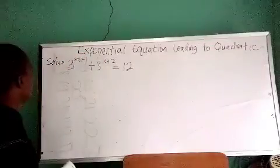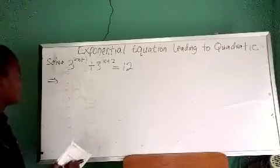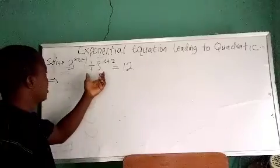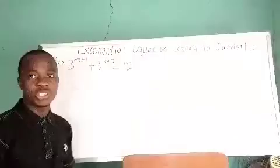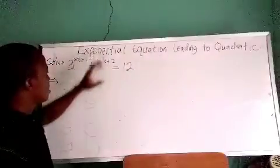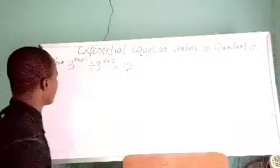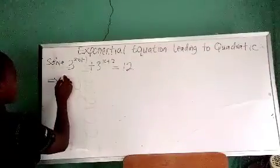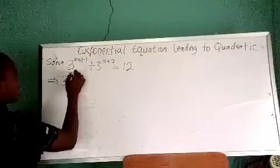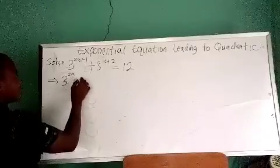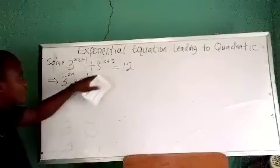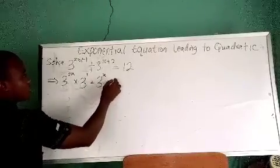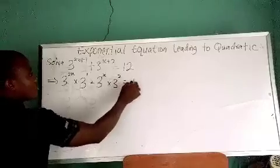From the first and second terms of this equation, we'll try to rewrite them using the rule of indices. The first term can be written as 3 to the power 2x multiplied by 3 to the power 1, and the second term can be written as 3 to the power x times 3 to the power 2, equals 12.